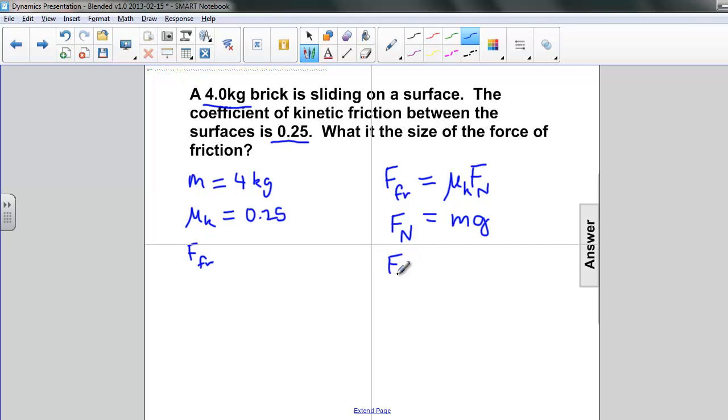Putting these together, we have the force of friction is equal to the coefficient of kinetic friction times m times g. Let's plug all those numbers in. We have 0.25 for the coefficient, a mass of 4 kilograms, and 9.8 meters per second squared for acceleration due to gravity.